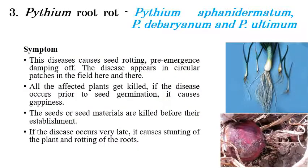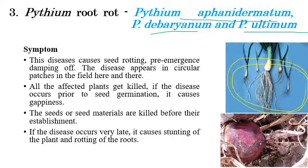The third disease is Pythium Root Rot, caused by Pythium aphanidermatum, Pythium debaryanum, and Pythium ultimum. The disease occurs in two types: pre-emergence damping off and post-emergence damping off. In pre-emergence damping off, infection occurs before the seedlings emerge from the soil.